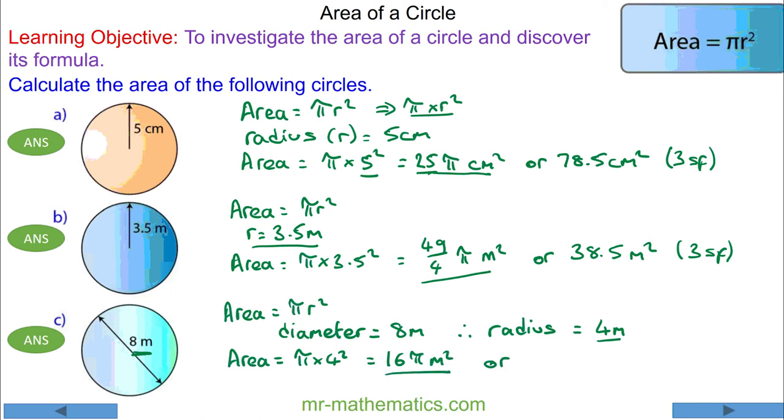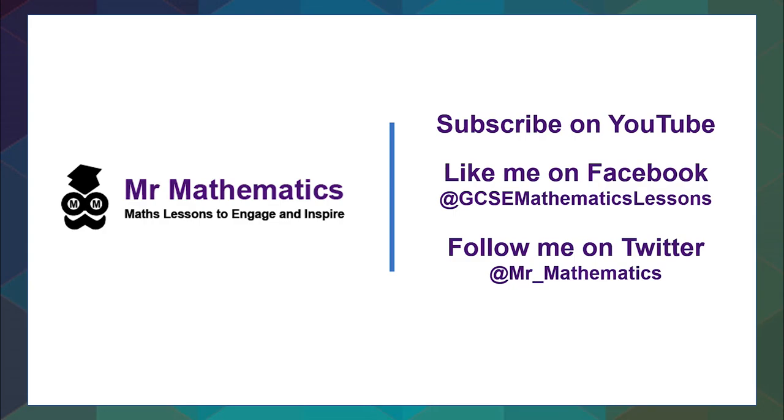Or 50.3 meters squared correct to three significant figures. Thank you for watching, I hope you found that useful. Check out mrmathematics.com for the full lesson and worksheet.